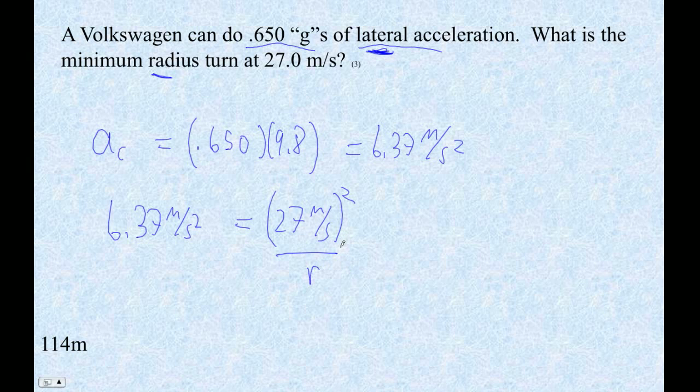So now let's just do the math here. 27 squared is 729, meters squared per second squared, and that's divided by R.